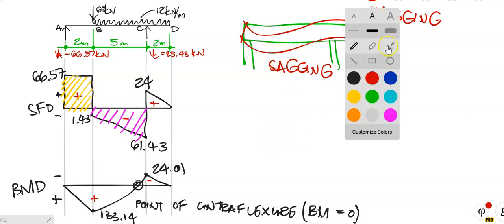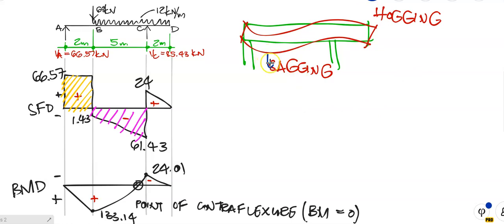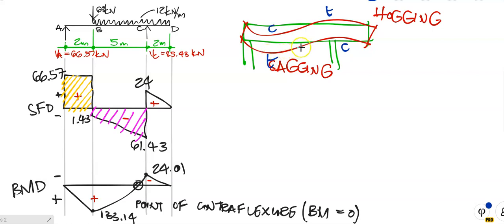If I look at the fibers at the bottom between the supports — they are in tension. At the top they are in compression. As we go over the support, the fibers at the top are in tension — they want to break apart — and at the bottom they are in compression. So somewhere from there to there the nature of the stress changes, and where does it happen? It happens at the point of contraflexure.